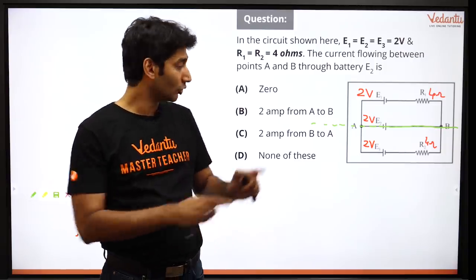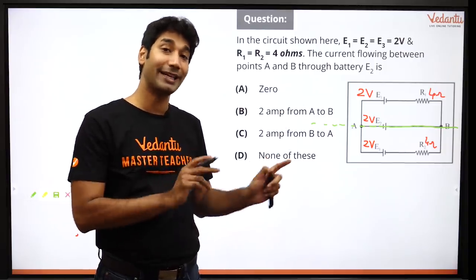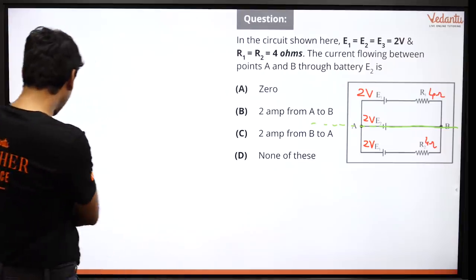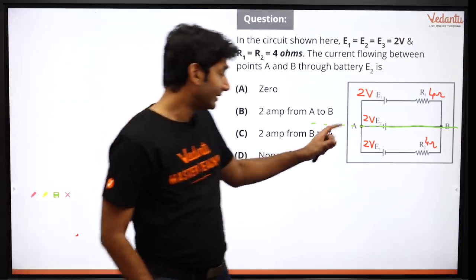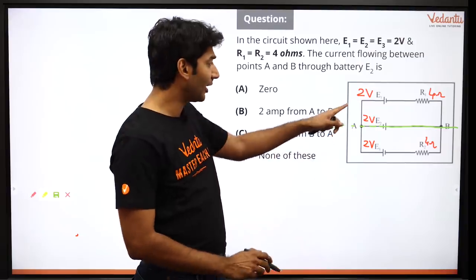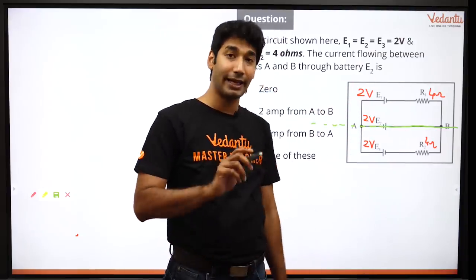Okay, so let me explain what will be the application here. Okay so let's do it. The way I am seeing here that this branch, the upper one and the lower one are symmetrical.